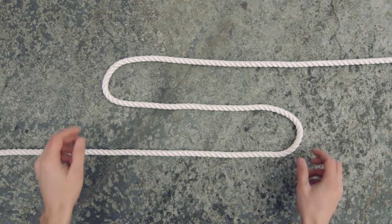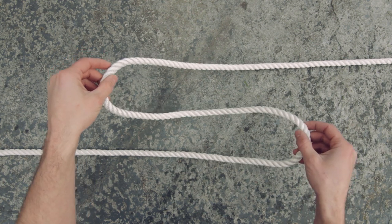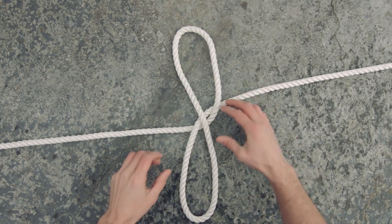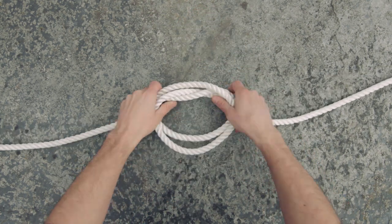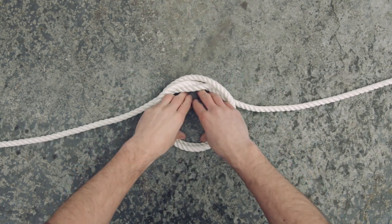We're going to start by making a really wide S with the rope and then grabbing both sides of the S and lift and twist to form two loops. Bring both loops together to form the constrictor knot.